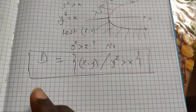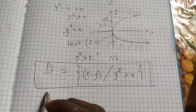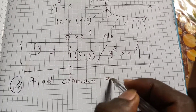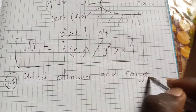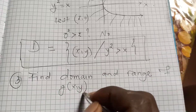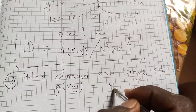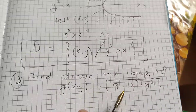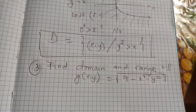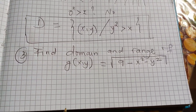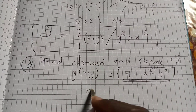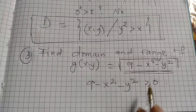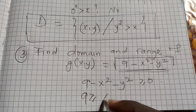Example 3: find the domain and range of g(x, y) = √(9 - x² - y²). For this multivariable function, we need 9 - x² - y² to be greater than or equal to zero, which means 9 is greater than or equal to x² + y².